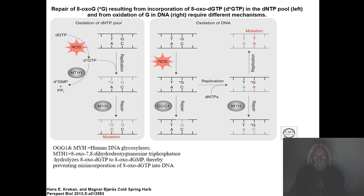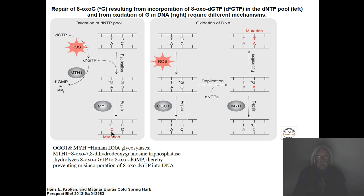The OGG protein and MYH are both human DNA glycosylases. You repair it, and look what happens: the repair yields a mutation. Because you had a T-A pair, and you went to G-A, which doesn't work — so the G now pairs back to a C. But you went from T-A to G-C. That's a mutation. Here you got a repair process that introduced a mutation in the process of trying to repair.